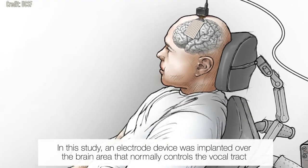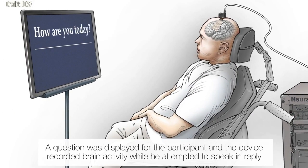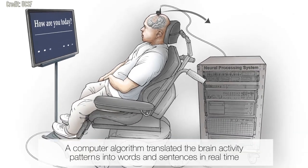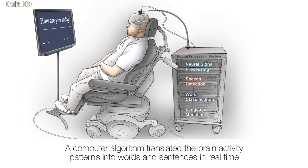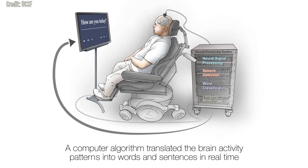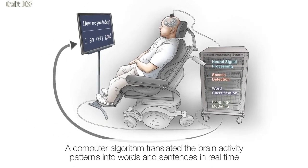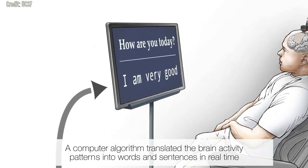But their success in decoding speech in participants who were able to speak didn't guarantee that the technology would work in a person whose vocal tract is paralyzed. In addition, the team didn't know whether brain signals controlling the vocal tract would still be intact for people who haven't been able to move their vocal muscles for many years.